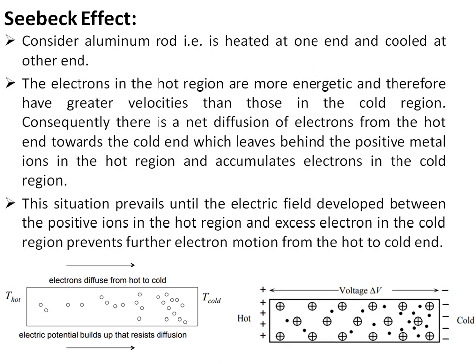The electrons in the hot region are more energetic because they have higher energy due to heat, and therefore they have greater velocities than those in the cold region. Consequently, there is a net diffusion of electrons from the hot end towards the cold end, which leaves behind positive charges in the hot region and accumulates electrons in the cold region. As shown in the figure, the electrons move from the hot end to the cold end.